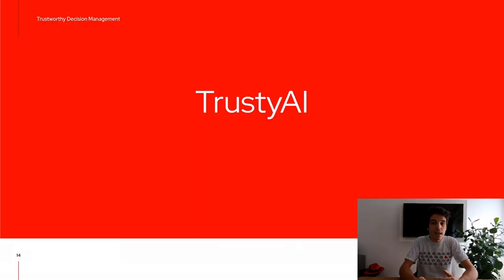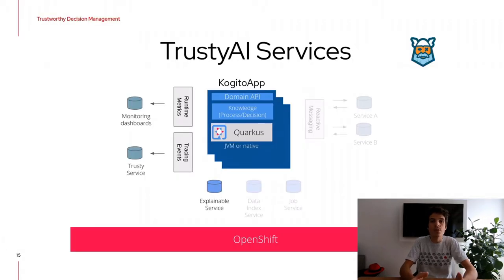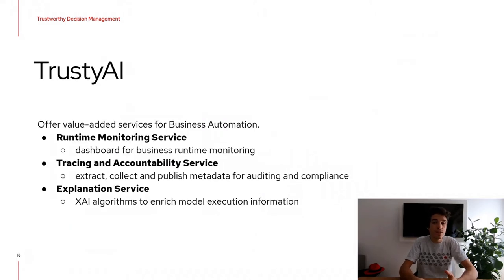TrustyAI is an initiative from Red Hat started two years ago, and its goal was to add capabilities to business automation services. TrustyAI is in the ecosystem of Cogito, together with some other services. The features that TrustyAI aims to add to decision services are monitoring, tracing, accountability, and explanation.